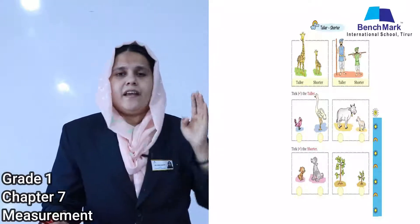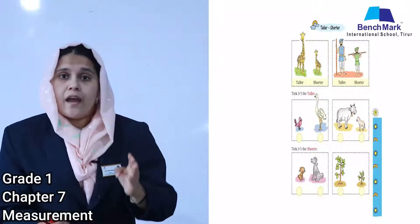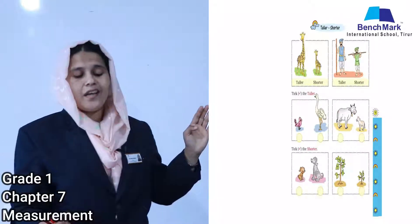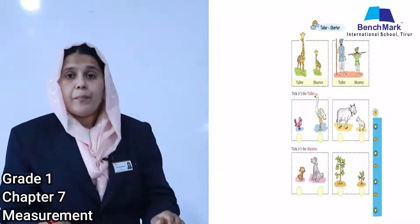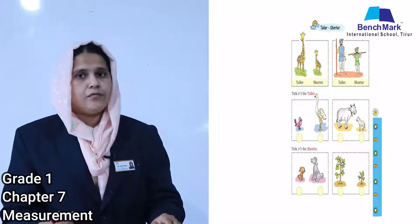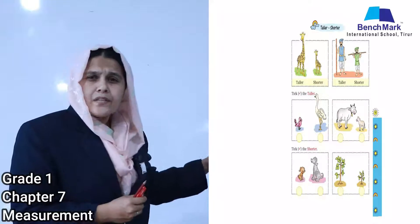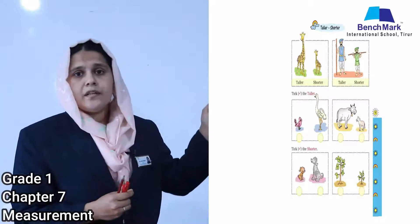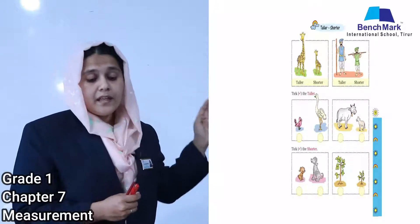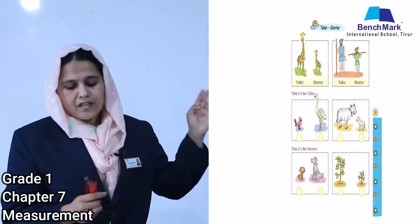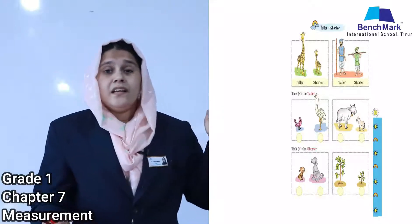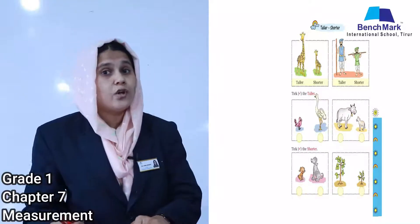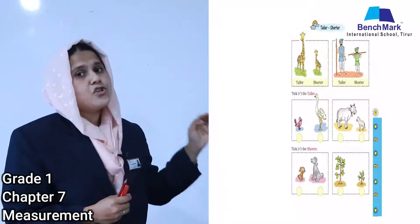Next, a cow and a calf — which one is taller? Yes, the cow is taller than the calf. The next question asks you to tick the shorter one: a puppy and a dog — the puppy is shorter than the dog, so tick the puppy. Then a tree and a plant — the plant is shorter.